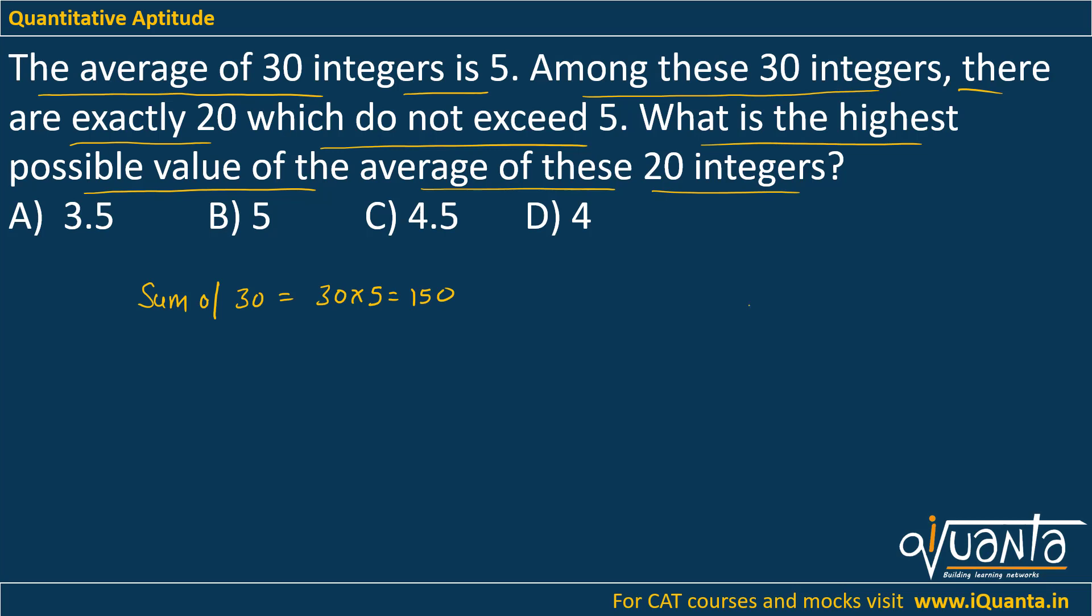Now there are 20 integers that do not exceed 5, that means they are either less than or equal to 5. And we have to find out the highest possible value of the average of these 20 integers.